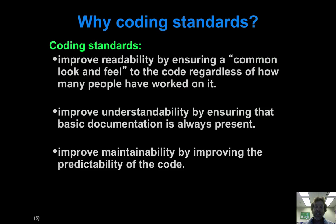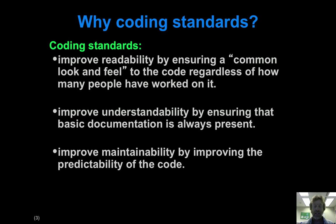Adhering to coding standards is a key part of collaborative software engineering and team-based system development because it immensely improves readability. When you're looking at code, you're not tripping over someone else's idiosyncratic notions of where to put braces or how many spaces to indent — it's always going to look the same. You can focus on the actual logic and design of the code without being put off by structural idiosyncrasies. We can also do checks to ensure basic levels of documentation are always present, which makes maintainability a lot better — your code won't look like it was written by 14 different people.